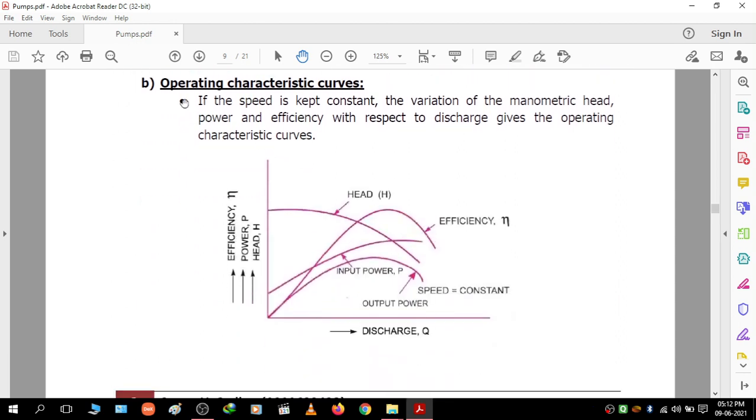Second is the operating characteristic curves. If the speed is kept constant, the variation of manometric head, power, and efficiency with respect to discharge gives the operating characteristics curves. This curve shows discharge plotted against efficiency, power, and head. This is the operating characteristics curve.